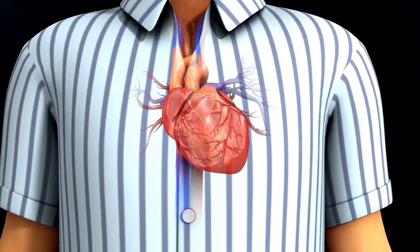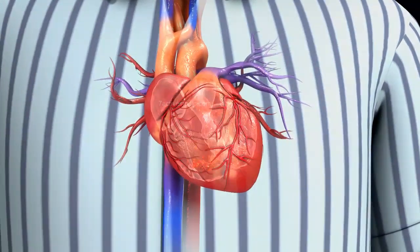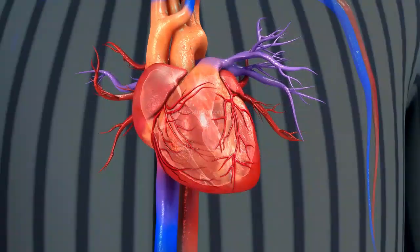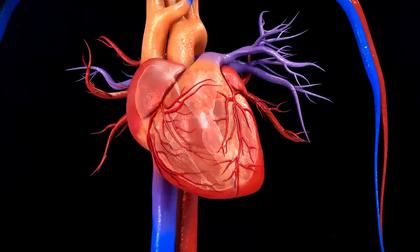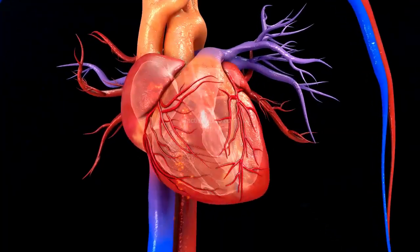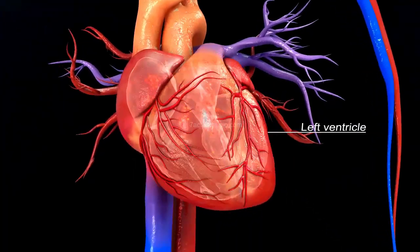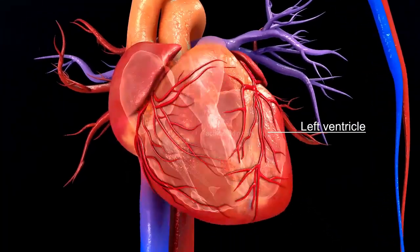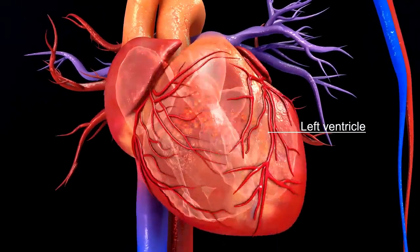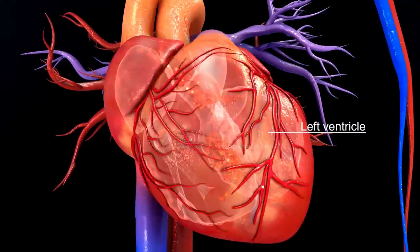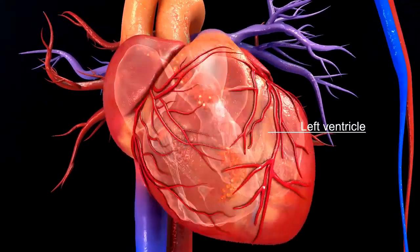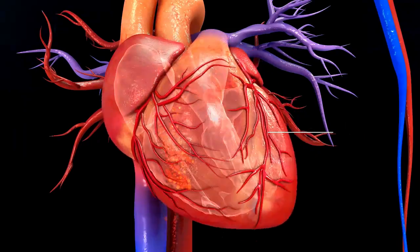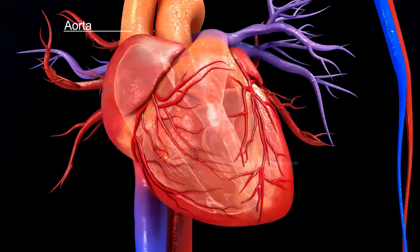The heart is a muscular organ that pumps blood containing oxygen and nutrients to the rest of the body. The left ventricle is the main pumping chamber of the heart and contracts to send oxygenated blood to the rest of the body through the aorta.